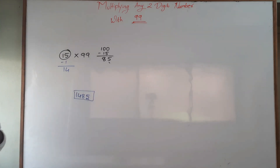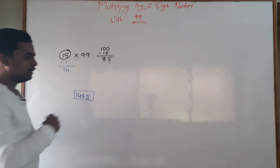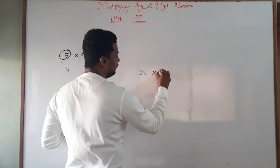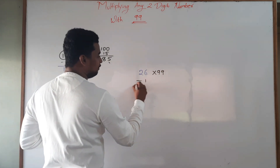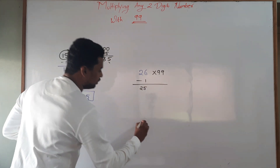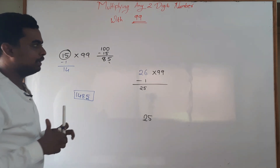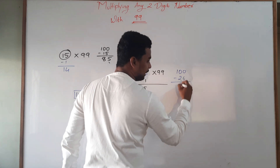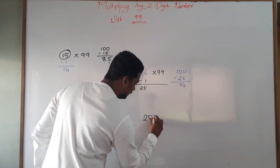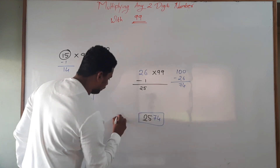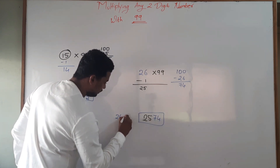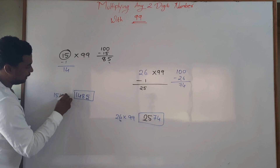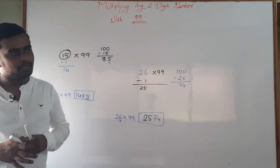Let us try one more small number. Let us take 26 multiplied by 99. Subtracting 1 from 26, I will get 25 — so the first two digits of my answer are 25. Next, I will subtract 26 from 100 and I will get 74, which I will add over here. So this is my answer for 26 multiplied by 99, which is 2574.